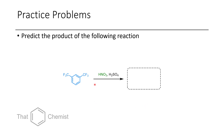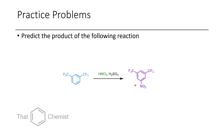In the next reaction we have 1,3-bis(trifluoromethyl)benzene. Using nitric acid in the presence of sulfuric acid is standard nitrating conditions. These trifluoromethyl groups tend to be weak electron-withdrawing groups, but they should both be directing to the meta position. Since there's only one meta position available, nitration should occur there.